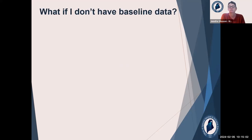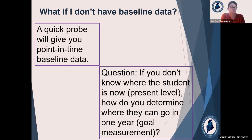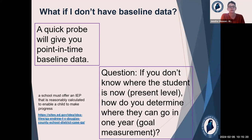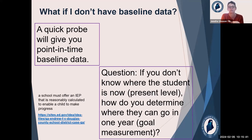We get this question a lot: what if this student is new to me and I don't have any baseline data for this goal? You can do a quick probe — that's your baseline. Right now, at this moment, this is where this student is with this skill. Think about Andrew F.: you must reasonably calculate those goals to make sure that the child can achieve them in a year. How are you going to do that if you don't know where they are right now? A quick probe is absolutely fine — right at this moment, they are here. This is your baseline data, and that will help you get to where they're going.